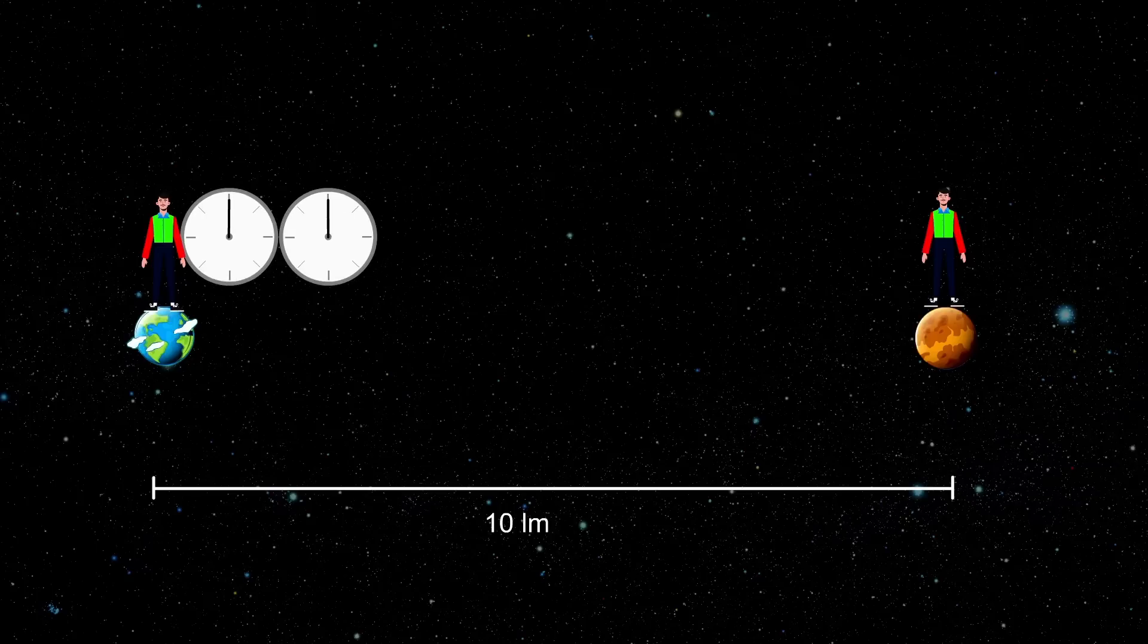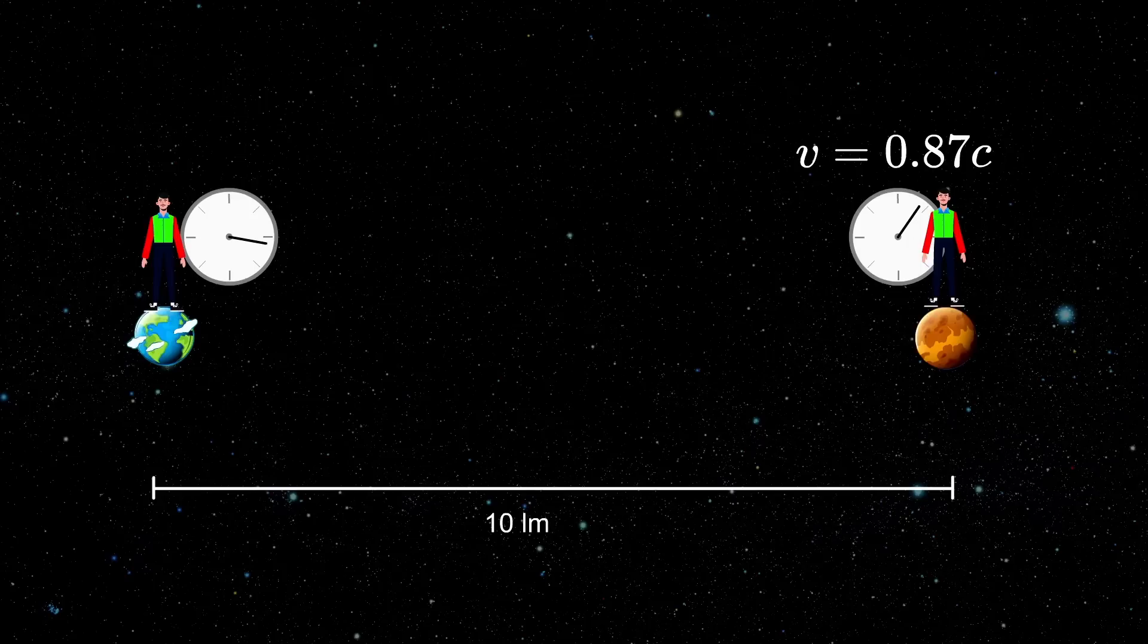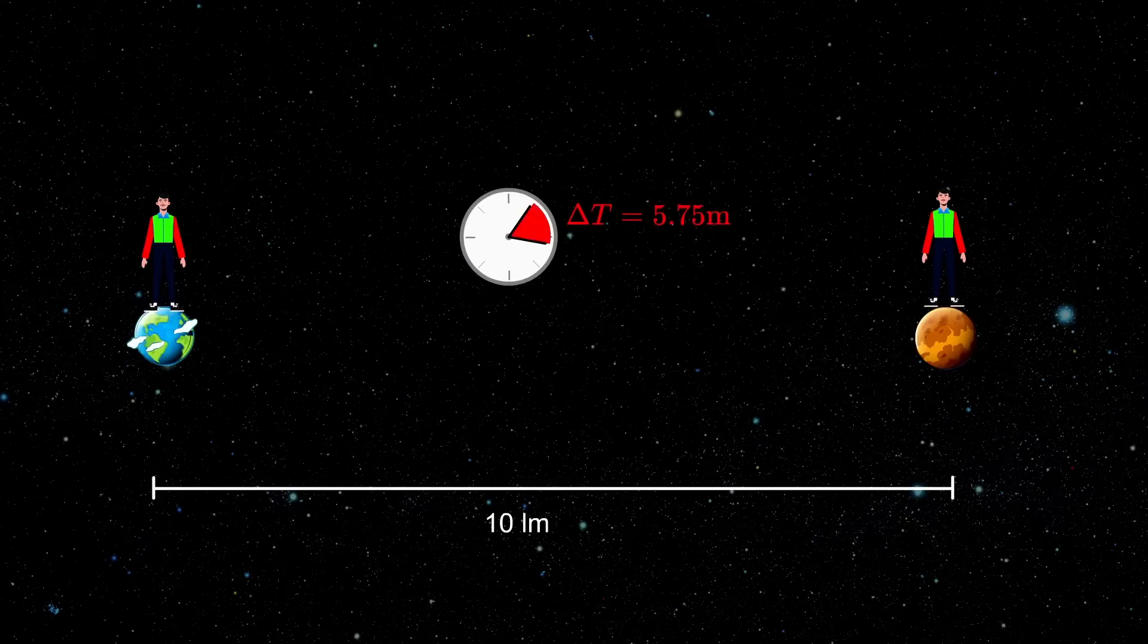But what if we make the speed lower? Let's say 0.87c, then the two clocks will be out of sync by just 5.75 minutes. So it feels like lowering the velocity increases the accuracy of the synchronization. Does it mean that we can make the accuracy arbitrarily precise by just lowering the transport velocity?